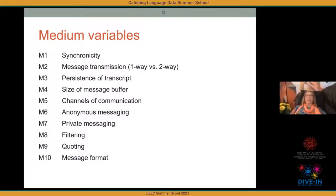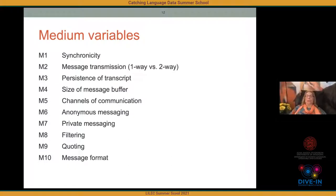Two-way message transmission — where you type keystroke by keystroke and the other person can see you in real time — was popular in the earliest form of CMC in the 1970s. ICQ in the late 1990s and early 2000s had a two-way interface as well, but it hasn't proven popular. Persistence of transcript refers to how long the transcript lasts — is it ephemeral or does it hang around forever? Message format refers to features like the nature of the header in email messages or the sequence of messages in blogs.